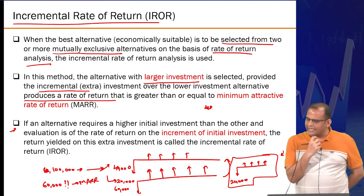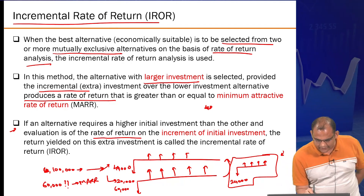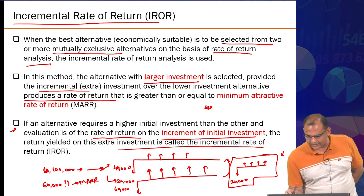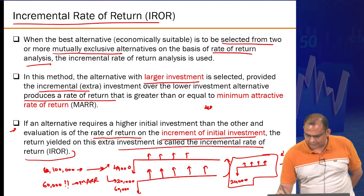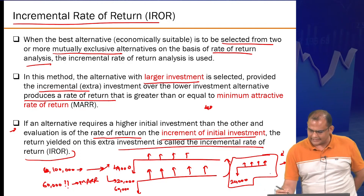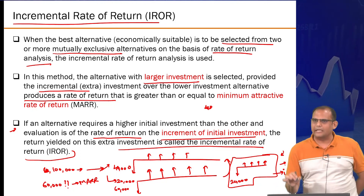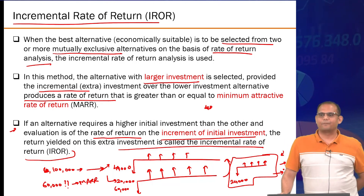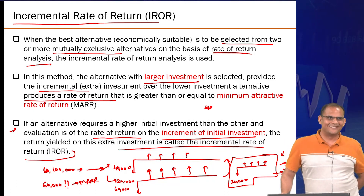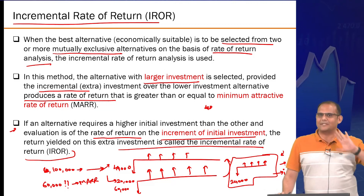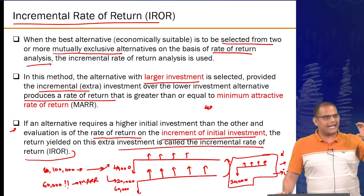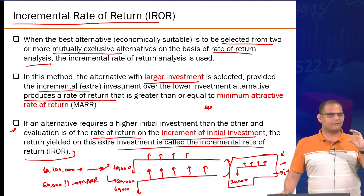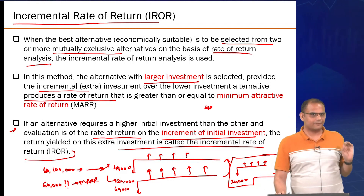If an alternative requires a higher initial investment than the other, the return yielded on this extra investment is called incremental rate of return. Once you have the incremental cash flow series, you calculate the I* of this incremental cash flow series — that is your incremental rate of return. Simply put: subtract one cash flow series from another, take the net cash flow series that results, calculate its I* — which is its rate of return — and call that the IROR, the incremental rate of return.